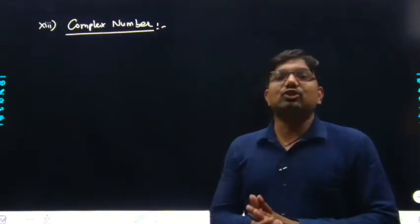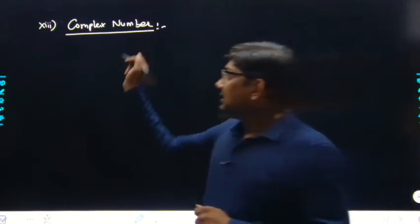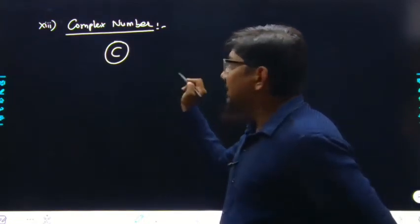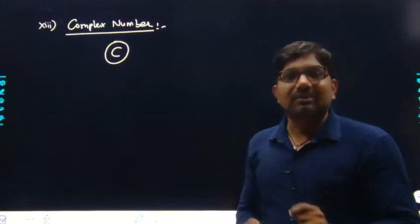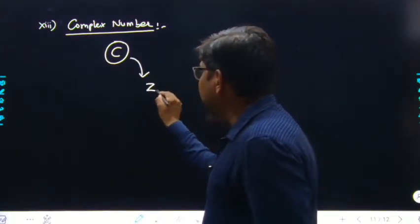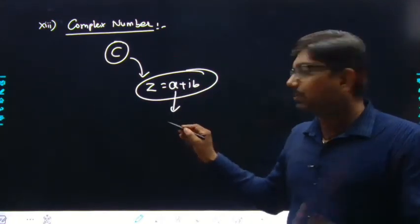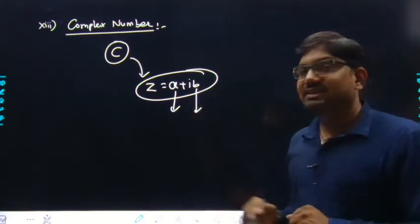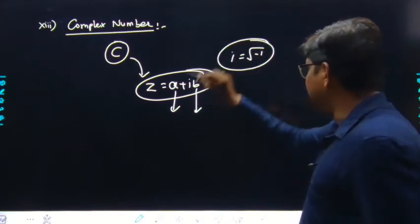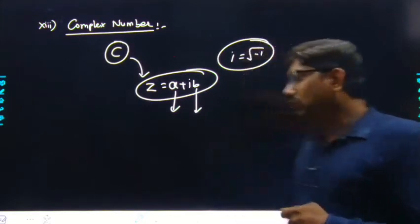Next है complex number। Complex numbers को C से represent करते हैं, most of the time Z से भी। Complex number is the combination of two parts: real part and imaginary part। Z = A + iB, जहाँ A is the real part और B is the imaginary part। Here i = √(-1)। इस complex number पर एक पूरा chapter पढ़ना है, जो detail में cover होगा।